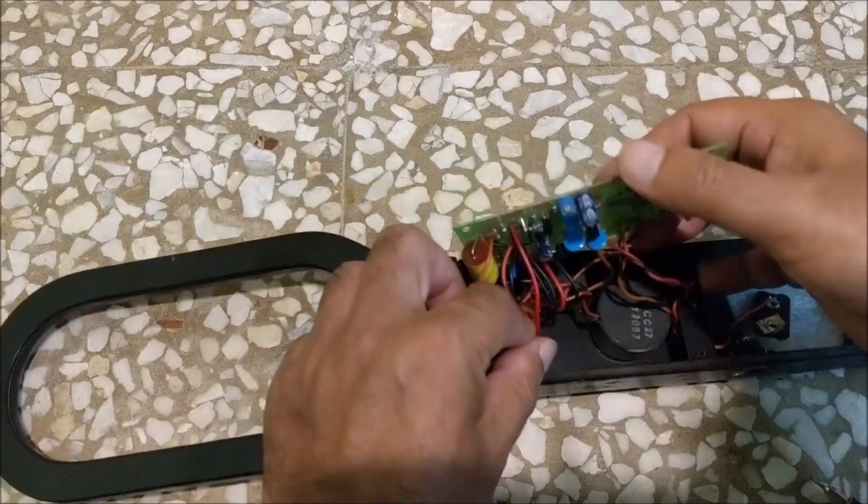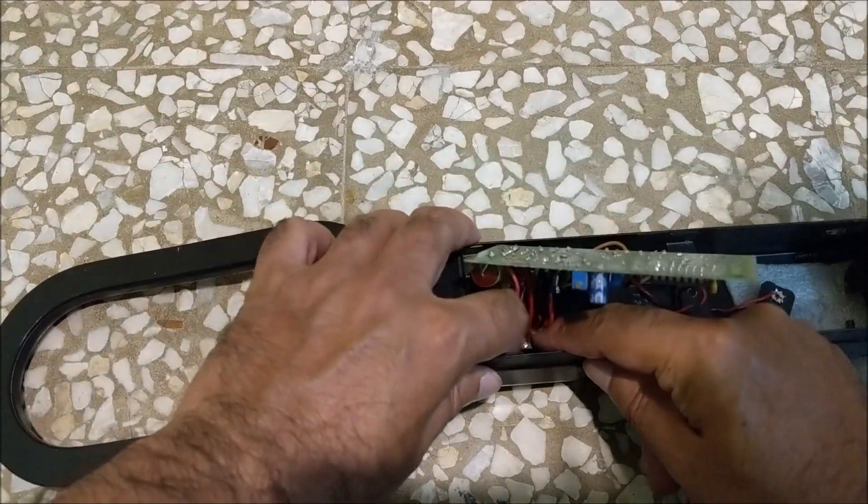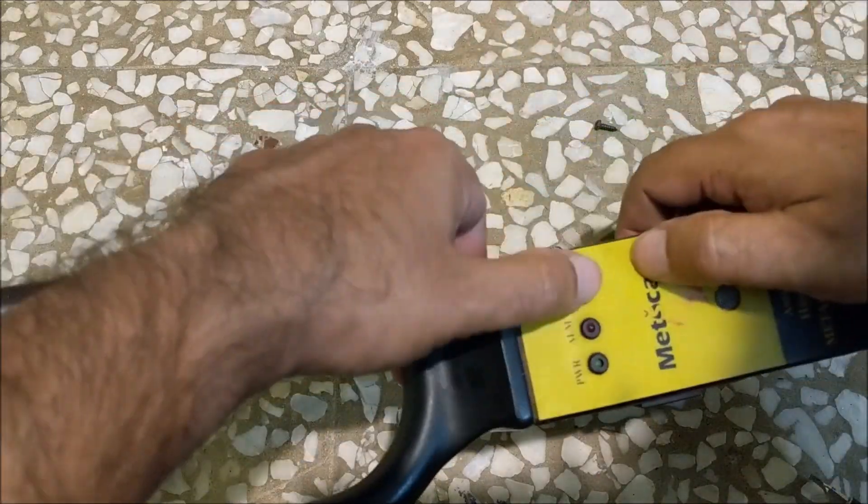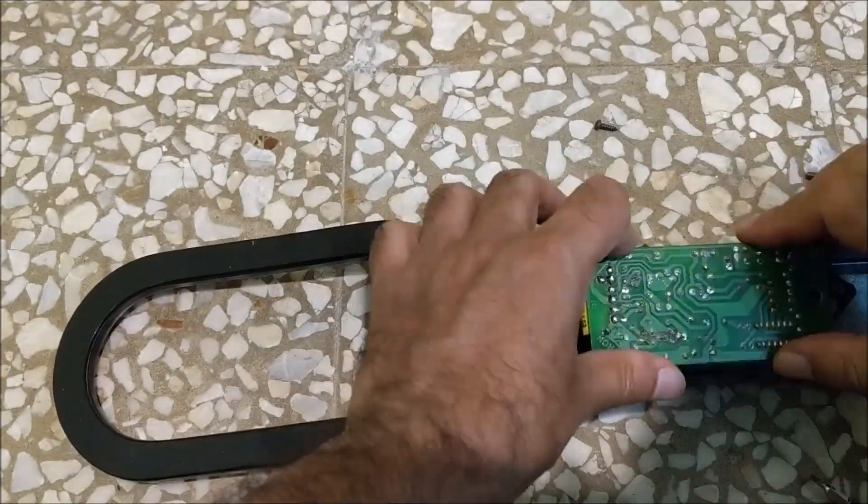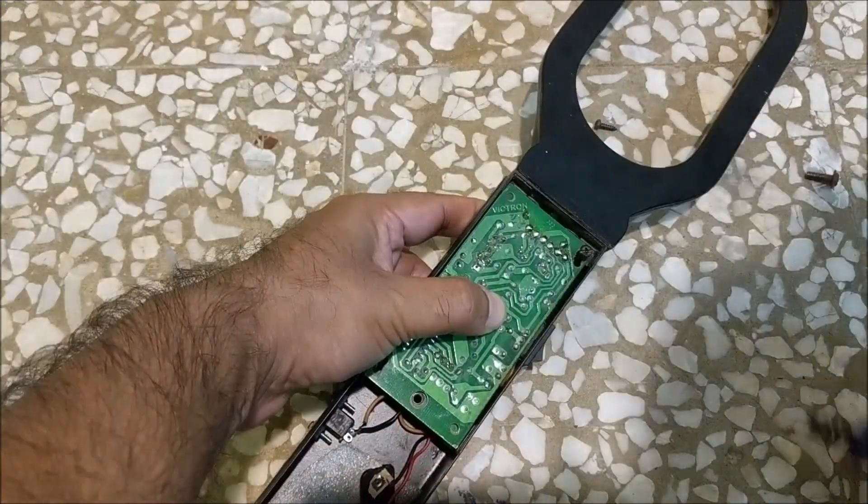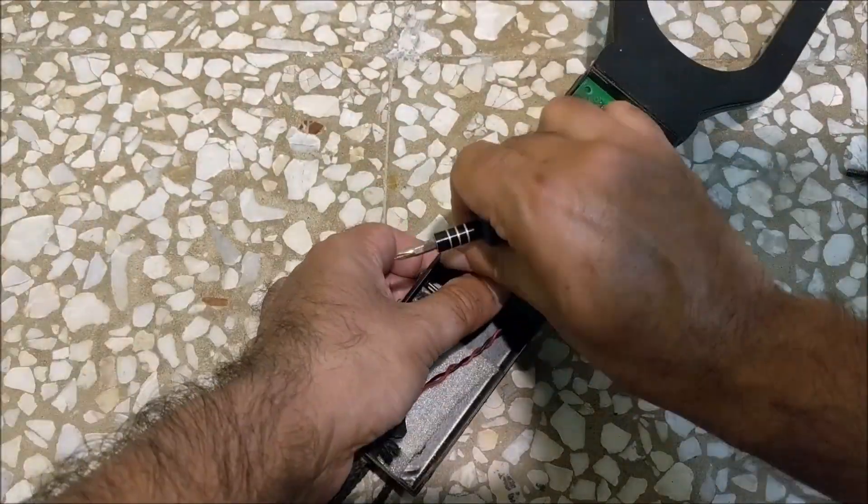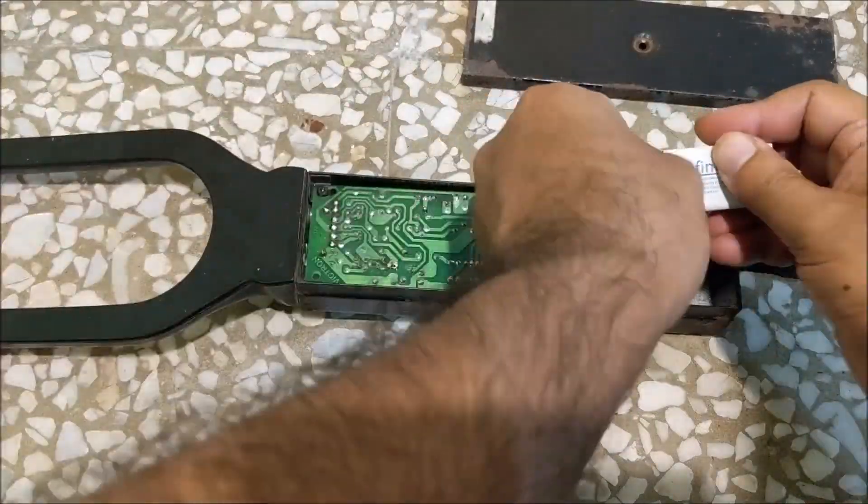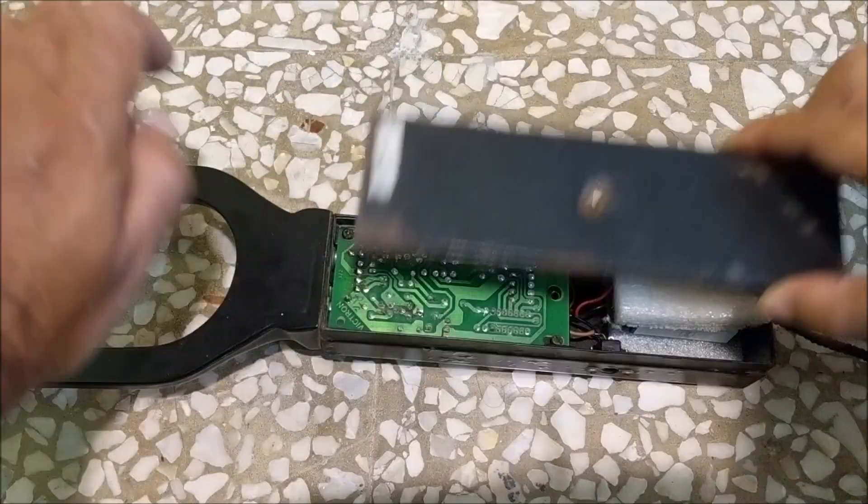Let's put the whole circuit back in the cabinet. First put the LEDs and then the main circuit. Now fit the 9V rechargeable battery and close the outer cover.